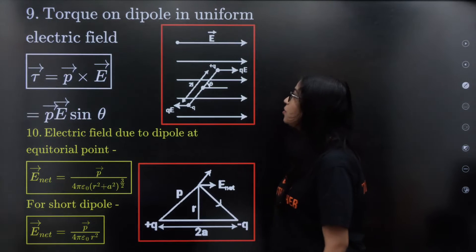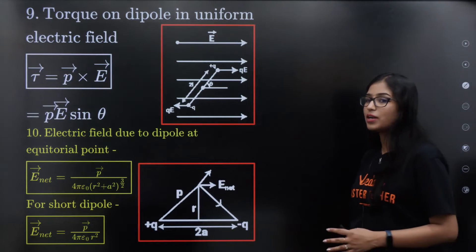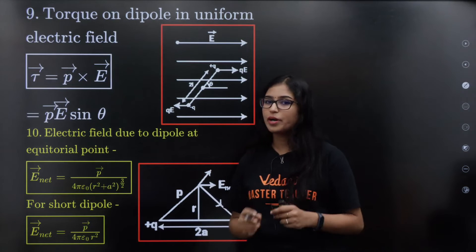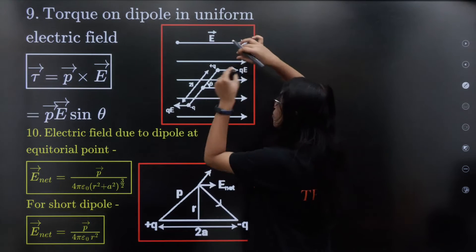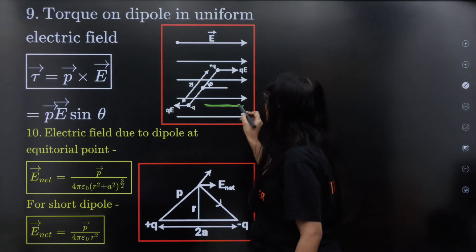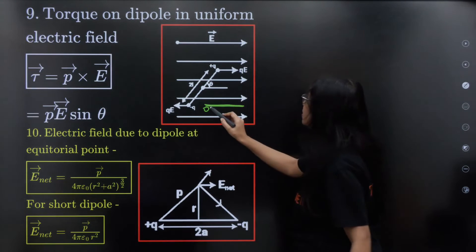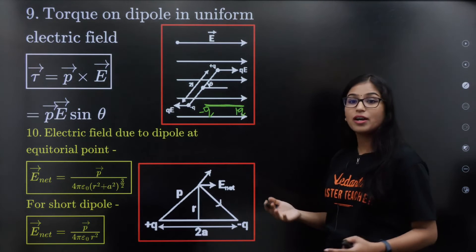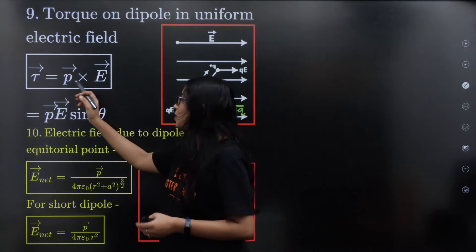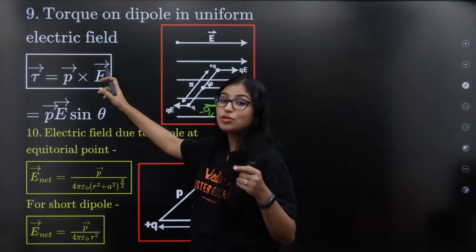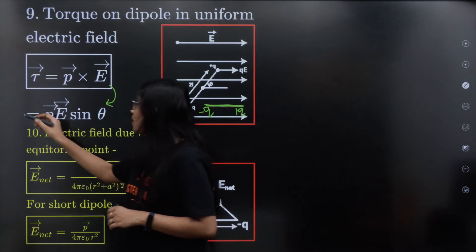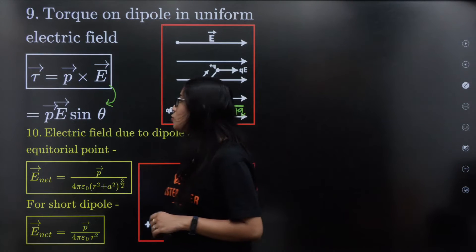Torque on a dipole in a uniform electric field. If we need to get an object to rotate, torque equals the cross product of electric dipole moment and electric field: τ = P × E. If we need a scalar, it is P·E·sinθ.